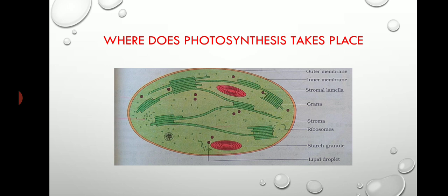Now, where does photosynthesis take place? We all know it is in the chloroplast. The chloroplast figure shows an outer membrane, an inner membrane, a grana region, and a stroma region. The chloroplast is surrounded by a double membrane layer. The grana region and stroma region are both important for photosynthesis — these are the two main regions where photosynthesis occurs.